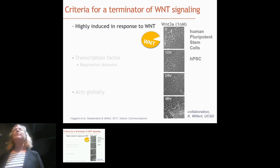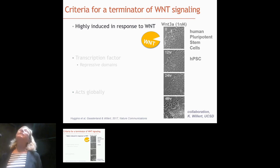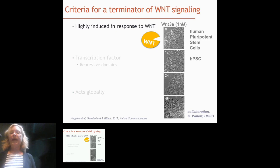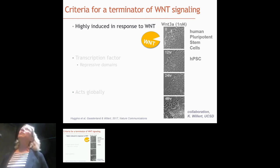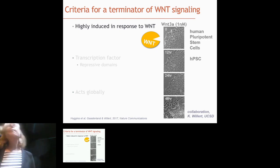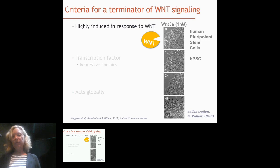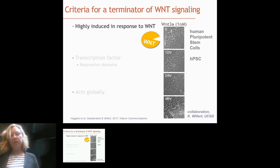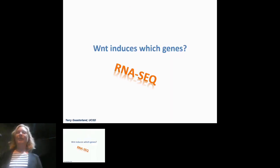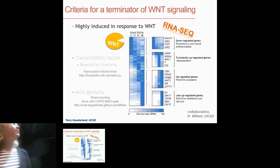Here's what we knew going in: Wnt is inhibited by Wnt antagonists that are turned on, inhibiting Wnt itself, beta-catenin, and signaling in the destruction complex. These Wnt antagonists operate at a pathway level. But what about the target genes — the genes turned on by the Wnt pathway? What happens next after they've been turned on? We decided to do an experiment to find this terminator of Wnt signaling.